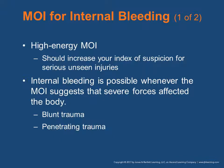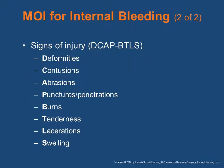The mechanism of injury for internal bleeding could be high energy, which increases your index of suspicion for serious unseen injuries. Internal bleeding is possible with severe forces affecting the body, such as blunt or penetrating trauma. Signs of injury include deformities, contusions, abrasions, punctures or penetrations, burns, tenderness, lacerations, and swelling.